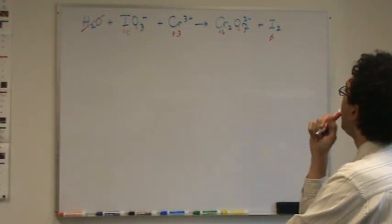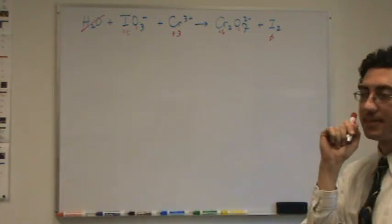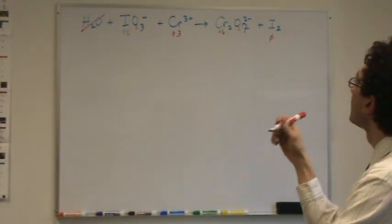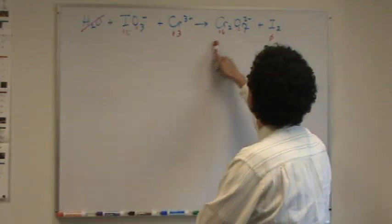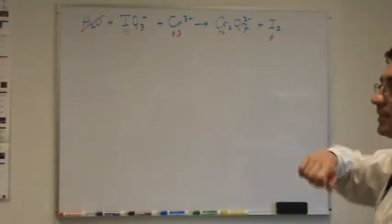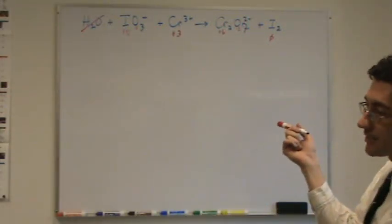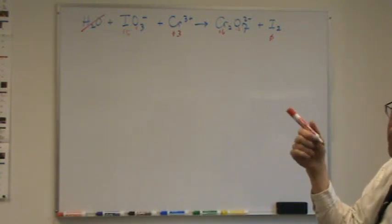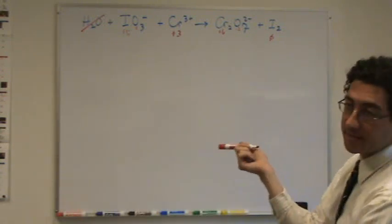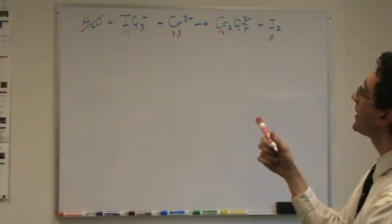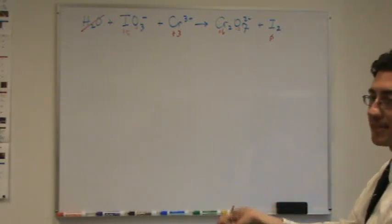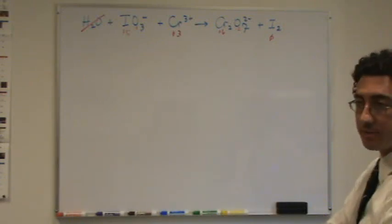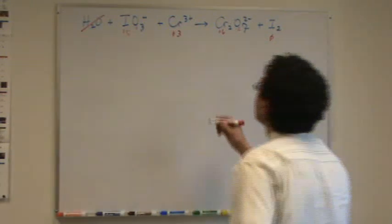Which one gets oxidized? Chromium gets oxidized. Which one is the oxidizing agent? Iodate. Yeah, you can say iodate or iodine. I'd accept both. So, iodine is reduced. It's also called the oxidizing agent. Chromium is oxidized. It's also called the reducing agent. Okay. Alright.